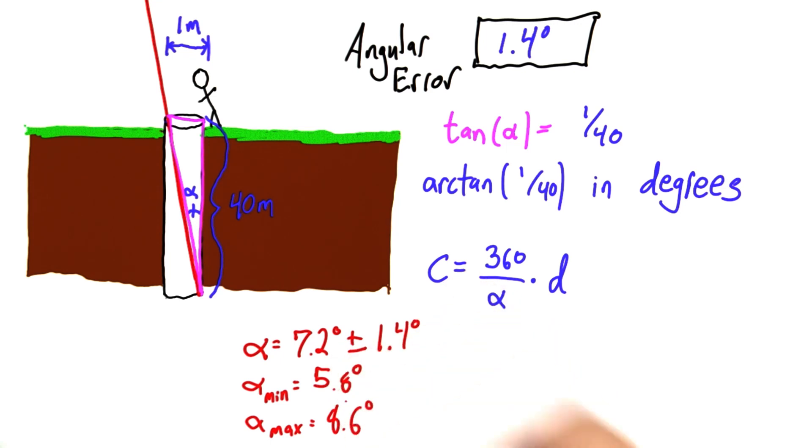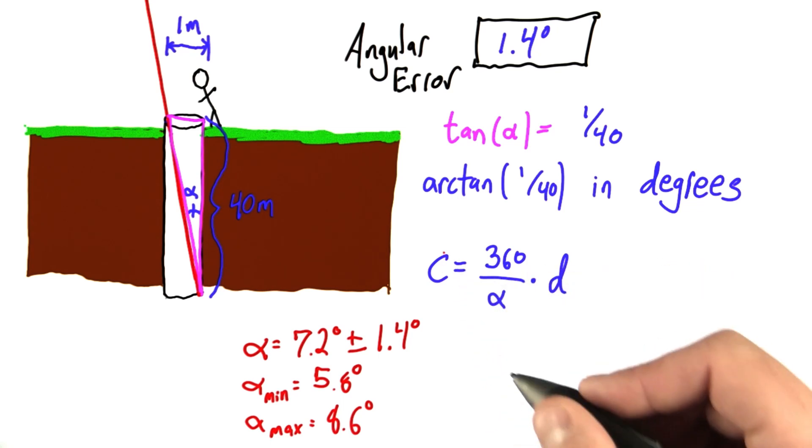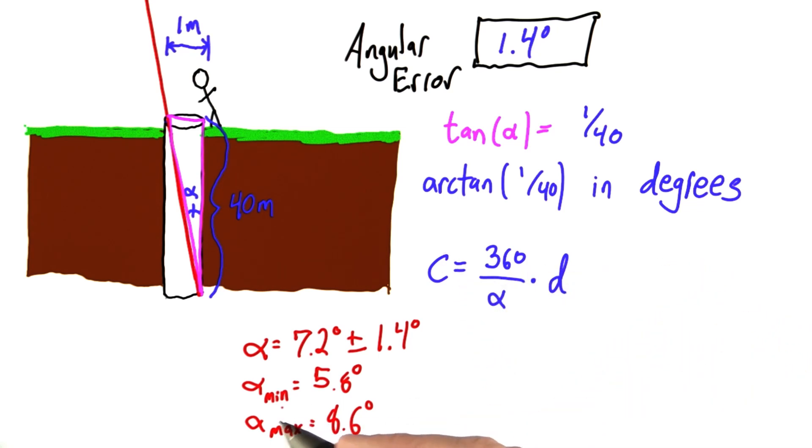That's our range of possibilities for alpha. And that's going to correspond to a range of possibilities for the circumference. In fact, let's use alpha min and use alpha max to calculate the circumference again.